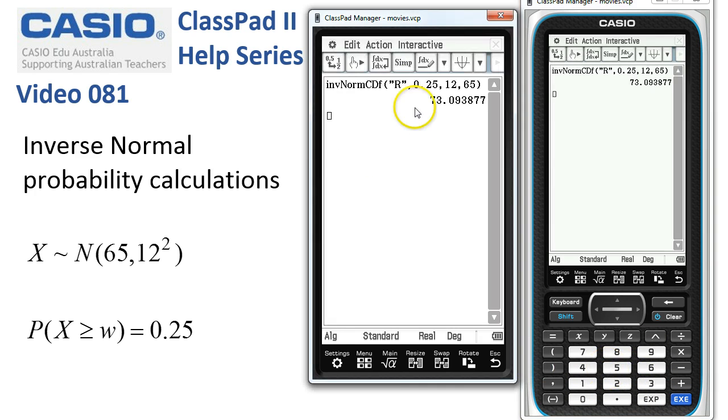When we tap OK, ClassPad says your weight would be about 73 kilos there. Just over 73 kilos.